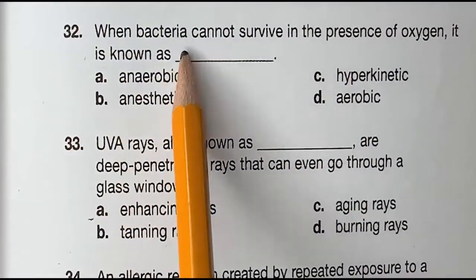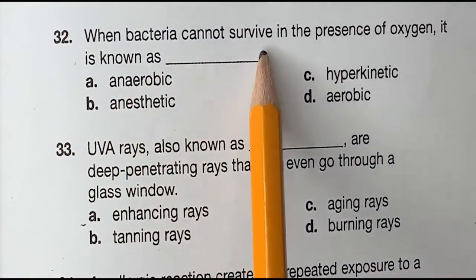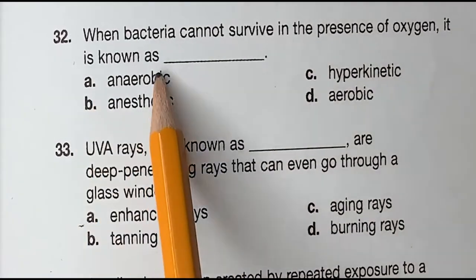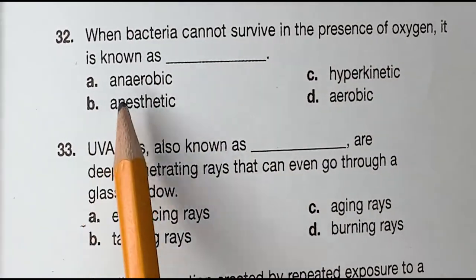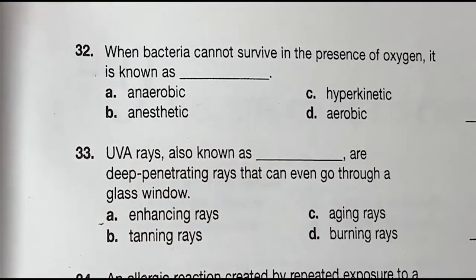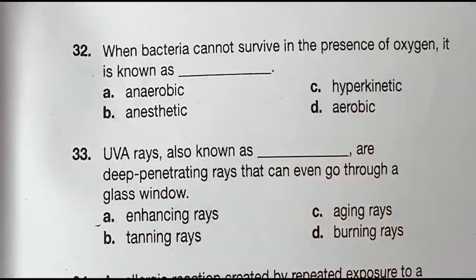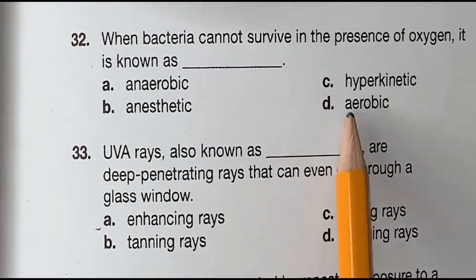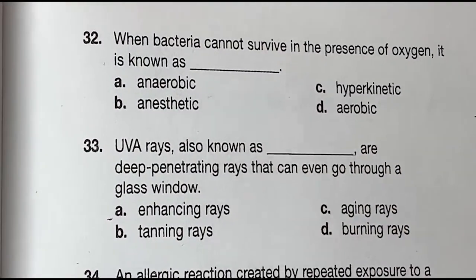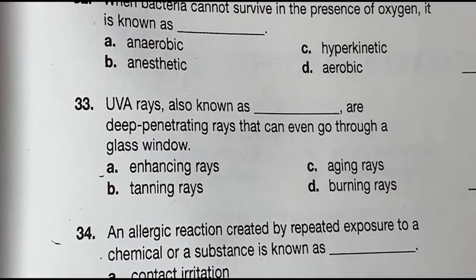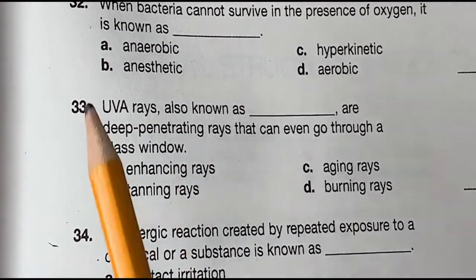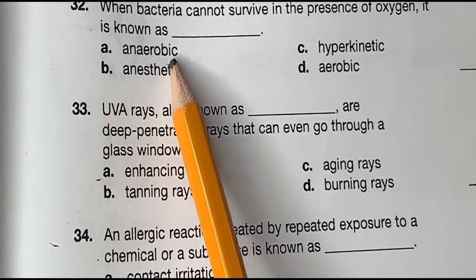Question 32: When bacteria cannot survive in the presence of oxygen, it is known as what? A, anaerobic. B, anesthetic. C, hypernetic. Or D, aerobic. And the correct answer is A, anaerobic.